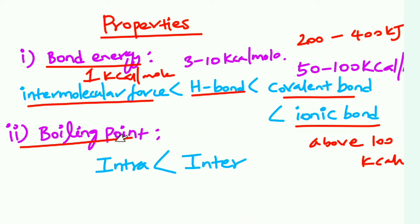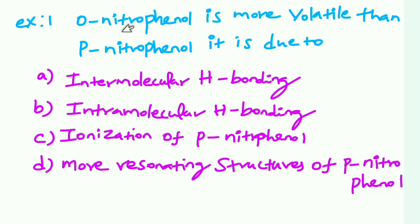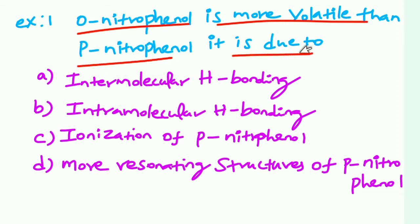Regarding boiling points: intramolecular hydrogen bonds result in lower boiling points, while intermolecular hydrogen bonds result in higher boiling points. Intermolecular hydrogen bonds are related to the boiling point. So, orthonitrophenol is more volatile than paranitrophenol.